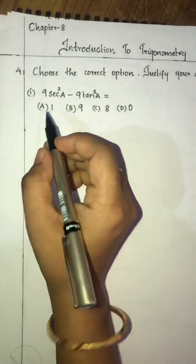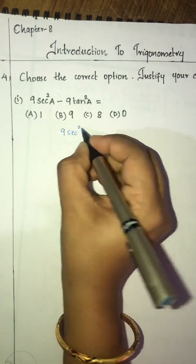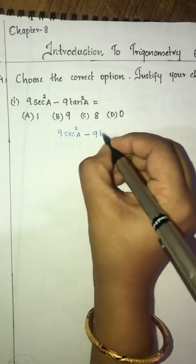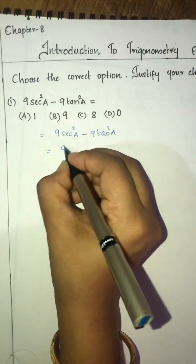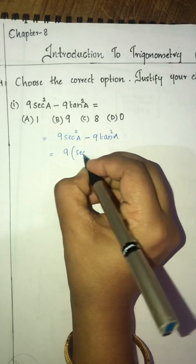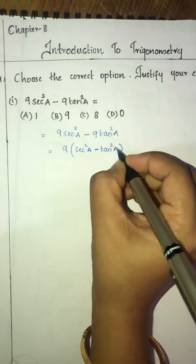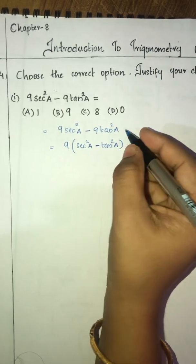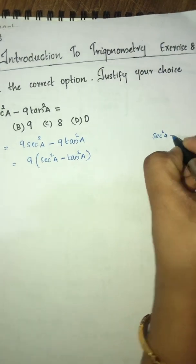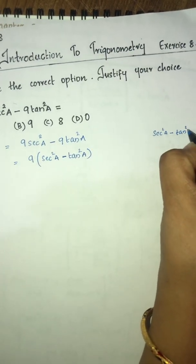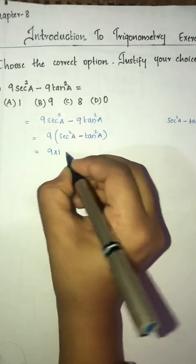9 is common in this expression: 9sec²A - 9tan²A. Taking 9 as common, we get 9 into (sec²A - tan²A). We know that the second trigonometric identity is sec²A - tan²A = 1. So we have 9 into 1, which is equal to 9.